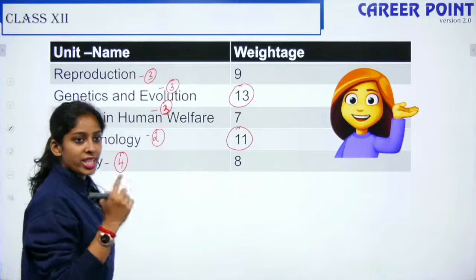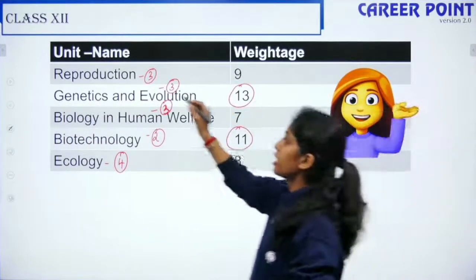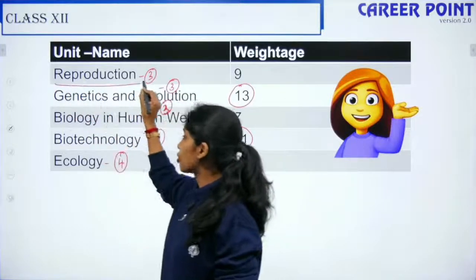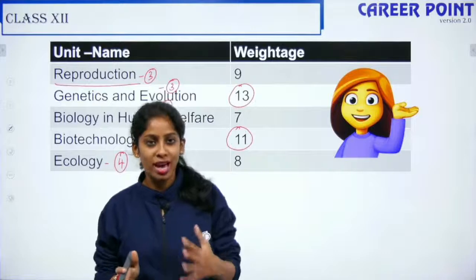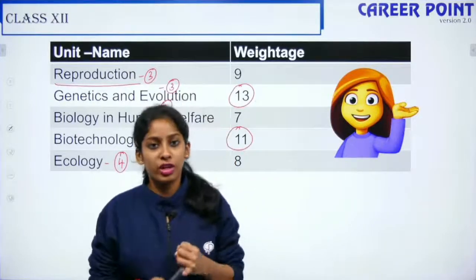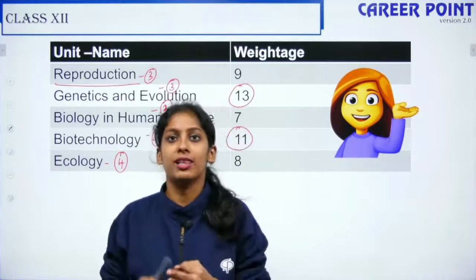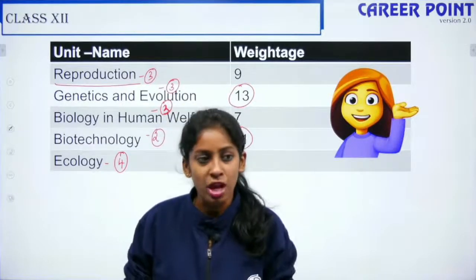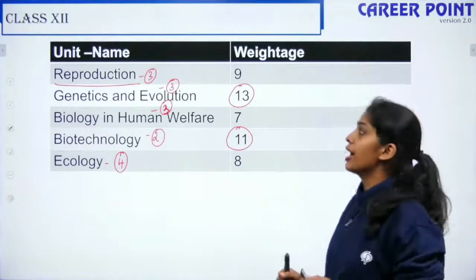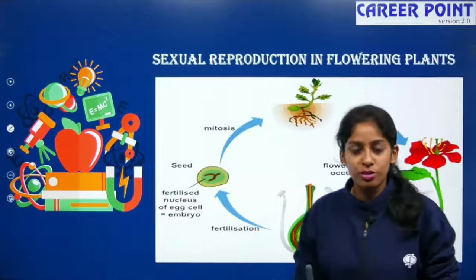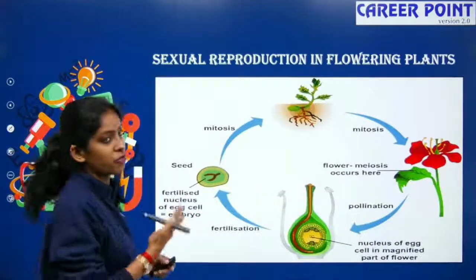This is the weightage according to the 2020 paper. We are starting with the first unit — Reproduction — which has three main chapters: Sexual Reproduction in Flowering Plants, Human Reproduction, and Reproductive Health. We'll be concentrating on these three under the unit Reproduction, and now we move forward to Sexual Reproduction in Flowering Plants.